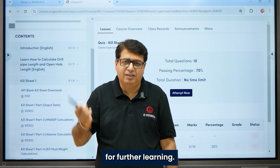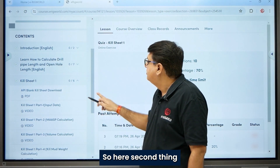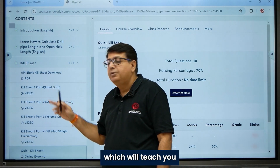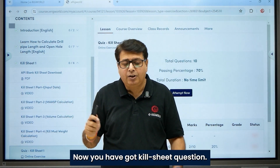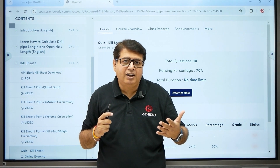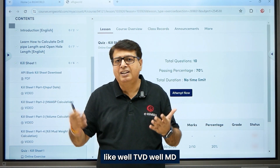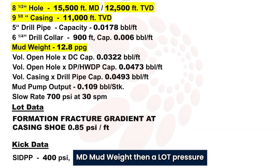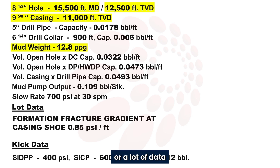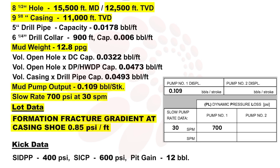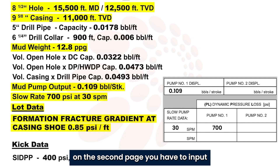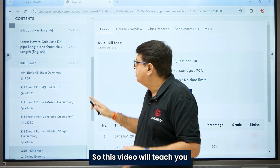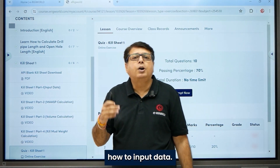The first video of each kill sheet number teaches you how to input data. From the question you input data like well TVD, well MD, shoe TVD, shoe MD, mud weight, LOT pressures or LOT data, and pump data. On the second page you input SIDPP and SICP to calculate kill mud weight and ICP and FCP.